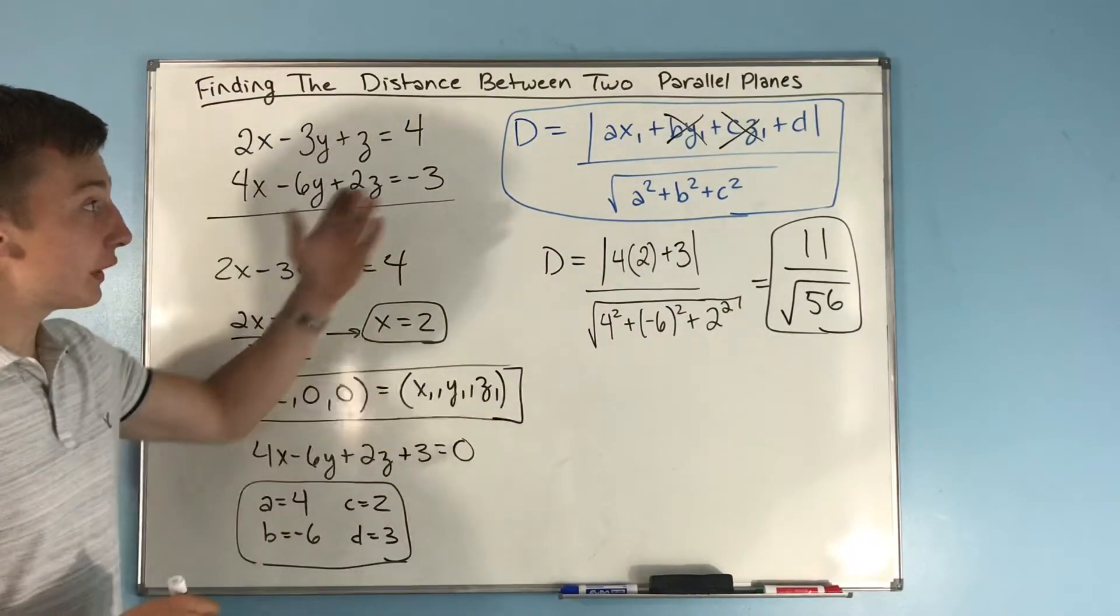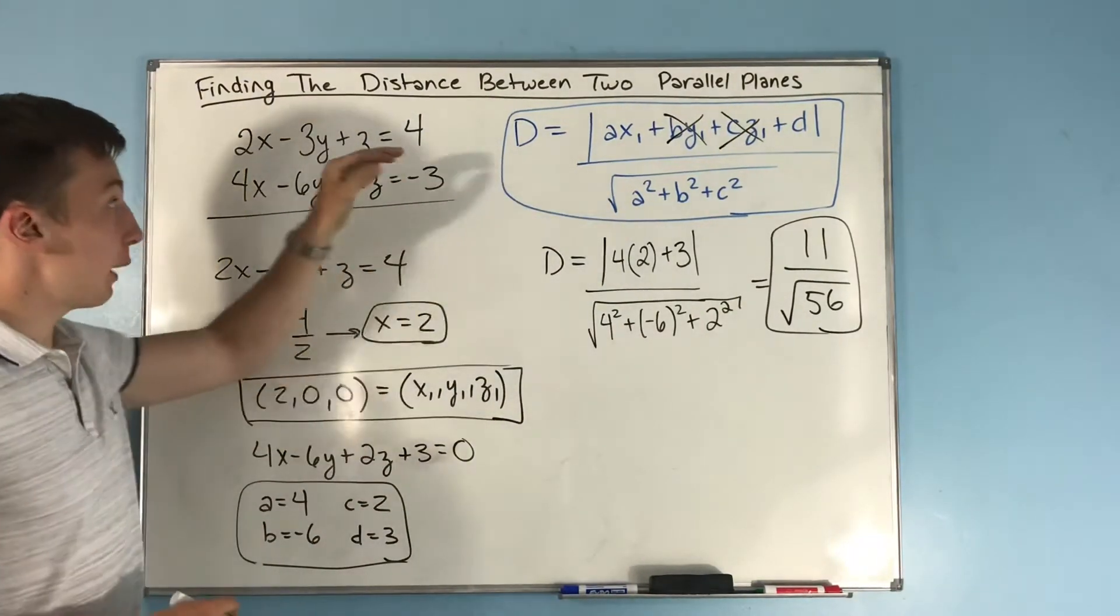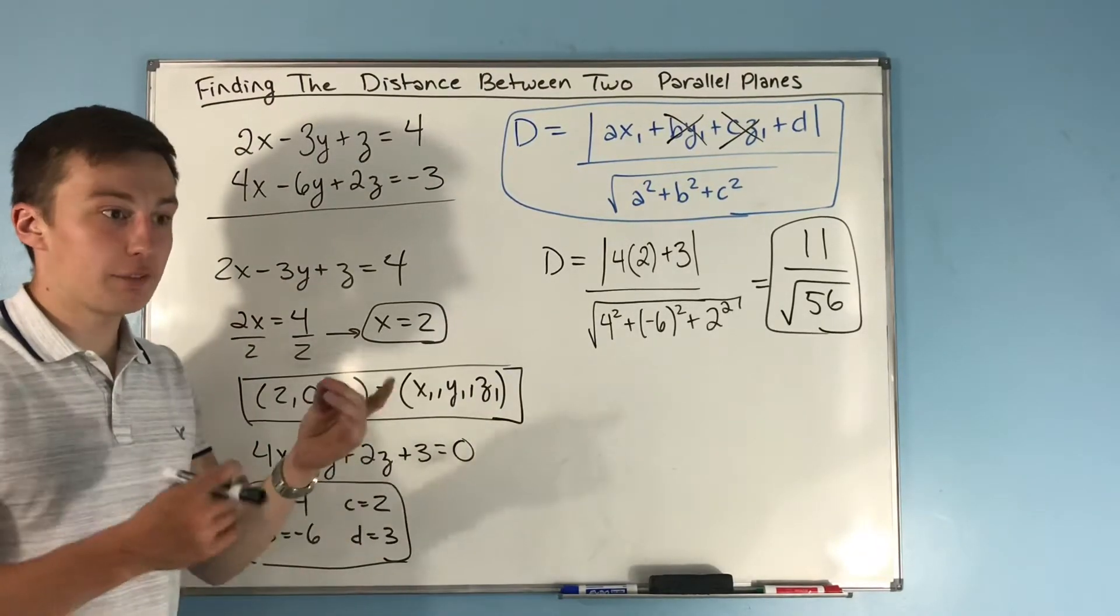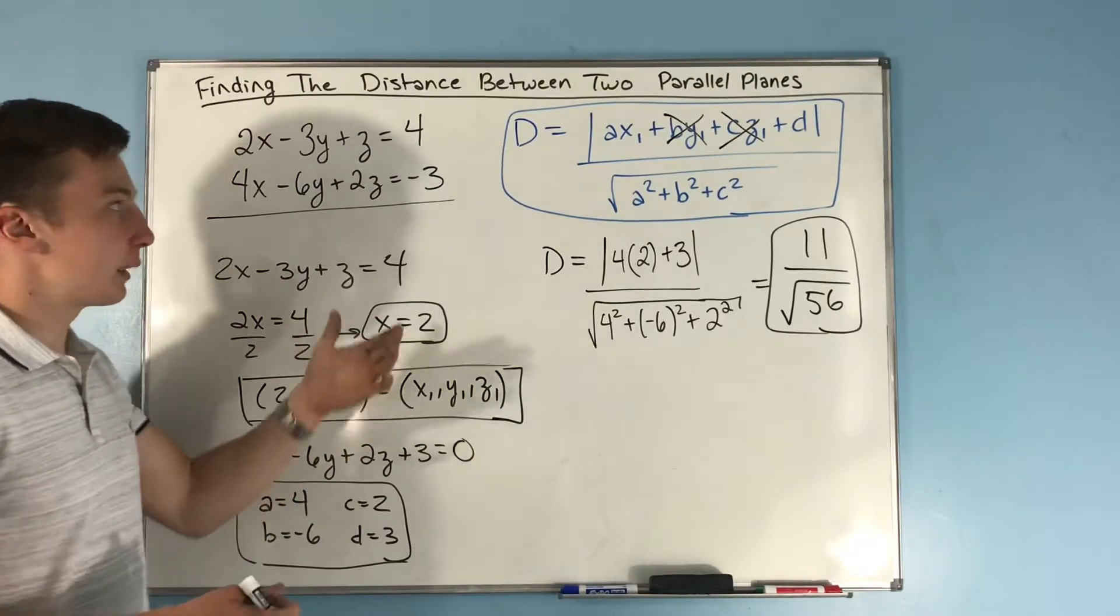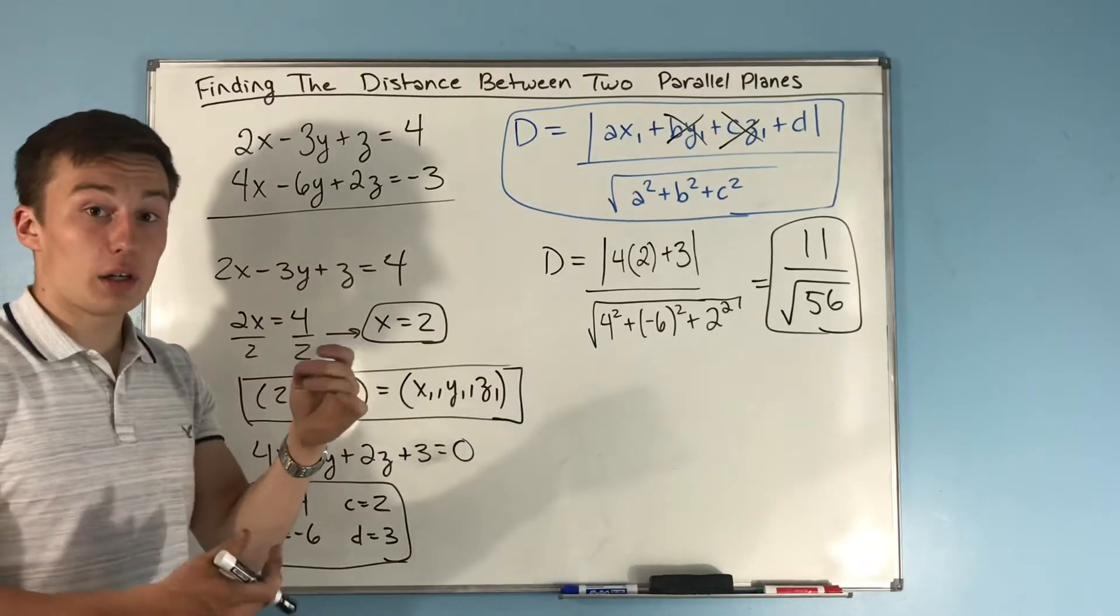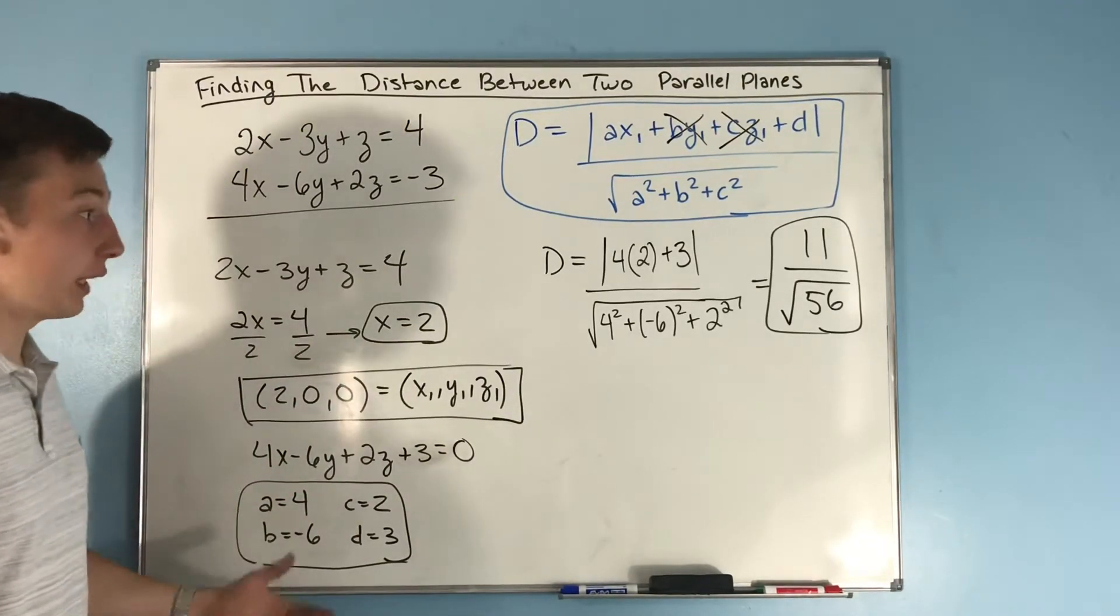So you can still use this formula, you just have to find a point on one of these planes, and then use that to find the shortest distance between that point and the other plane. That's really it.